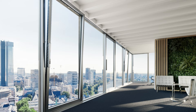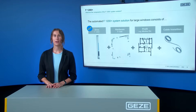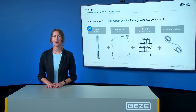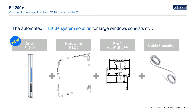Here you can see an example of the F1200 Plus mounted onto a window. In order to equip large tilt-and-turn or bottom-hung windows with a powerful F1200 Plus ventilation drive, further components are necessary. These include the powerful ventilation drive F1200 Plus, the robust F1200 fitting, the cable transition to supply the F1200 Plus with power, as well as a suitable aluminum window profile.